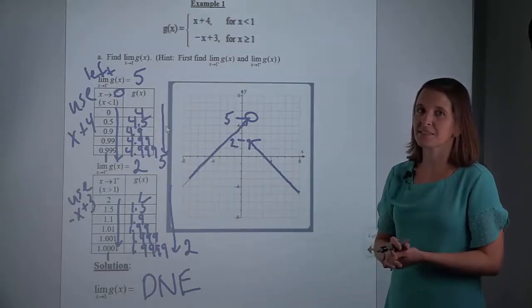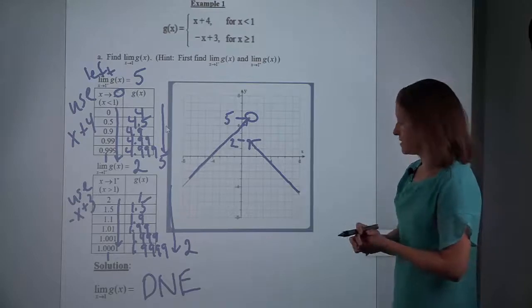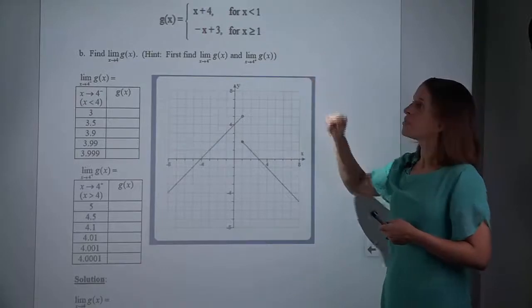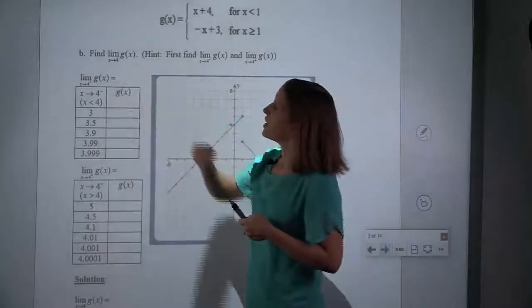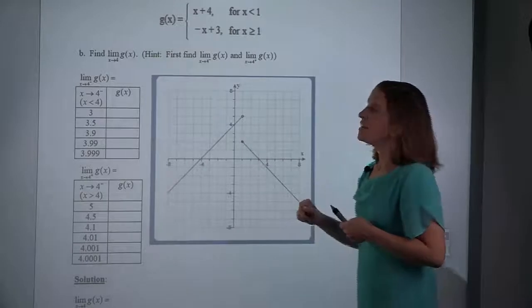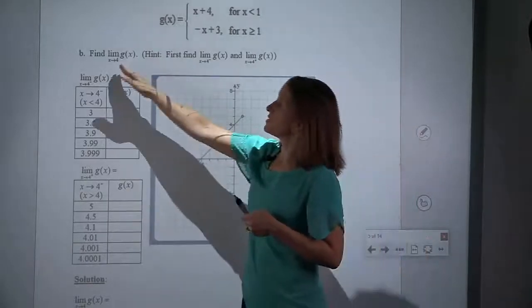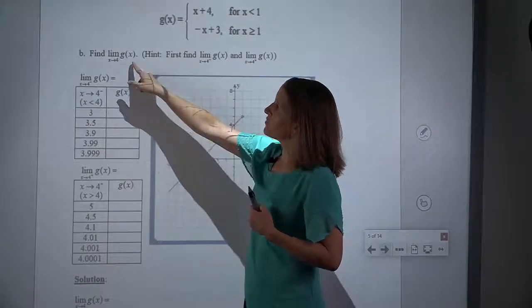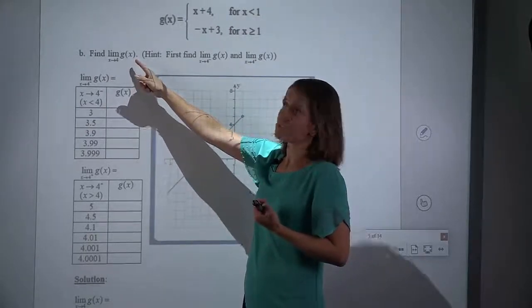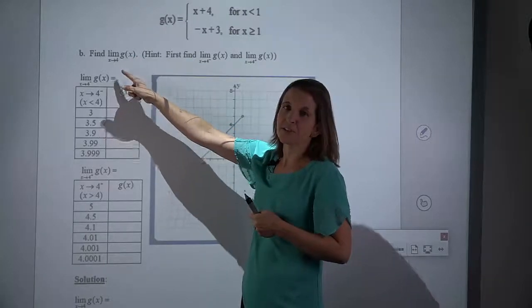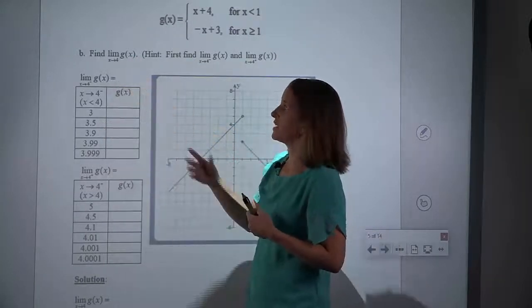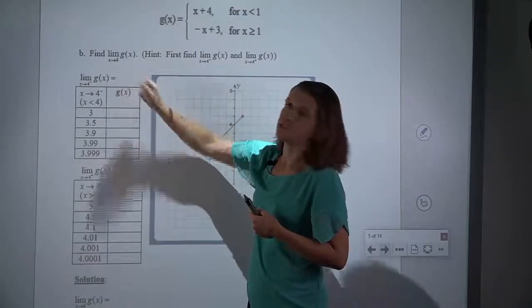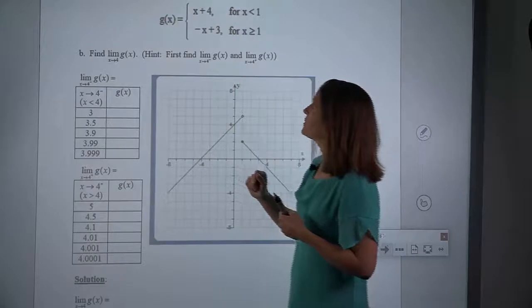But we'll make sure that we see an example where the limit does exist. So I actually have the same function here; we're simply looking at a different x value. That's why this notation is really important — the limit as x approaches something of something. What function we're tracing matters, and which x value we're getting close to matters and is going to change our answer, as you'll see here.